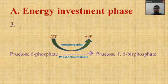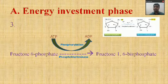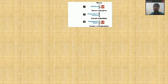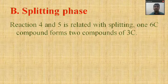Reaction three is catalyzed by the enzyme phosphofructokinase, with loss of one ATP molecule. Next is the splitting phase — reactions four and five — in which the six-carbon compound glucose is split into two three-carbon compounds, ultimately leading to pyruvate or pyruvic acid.